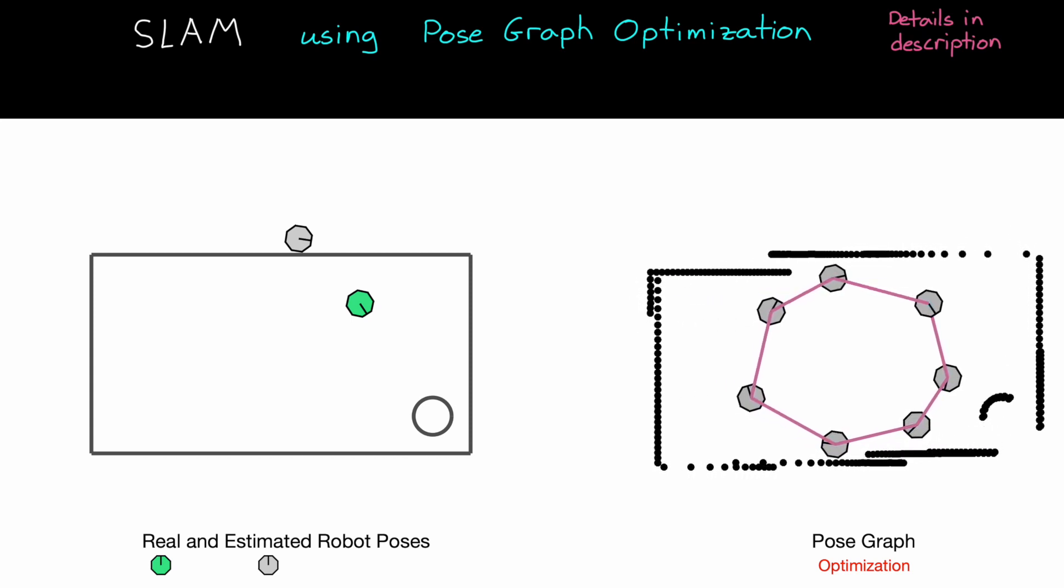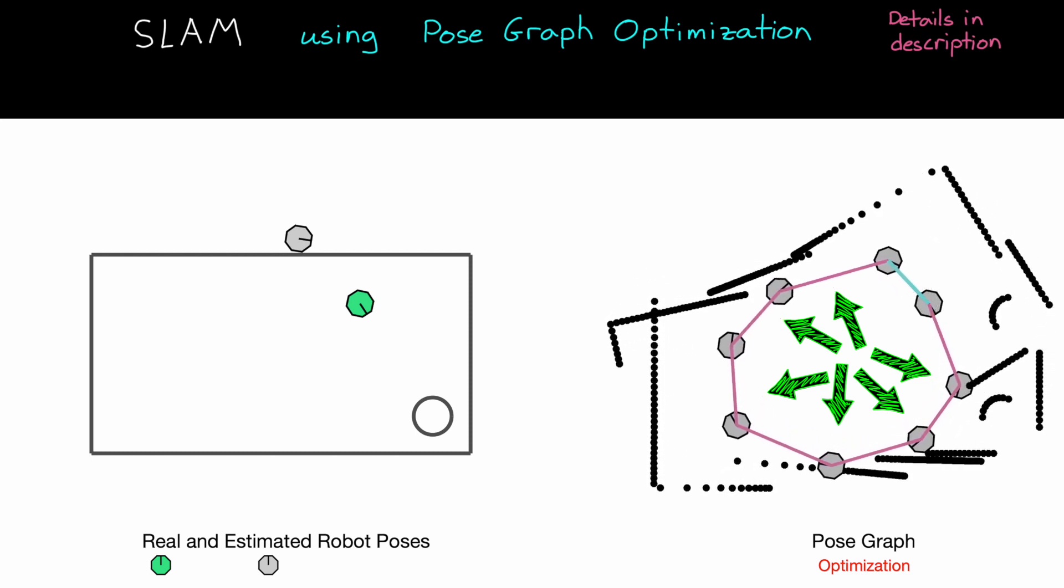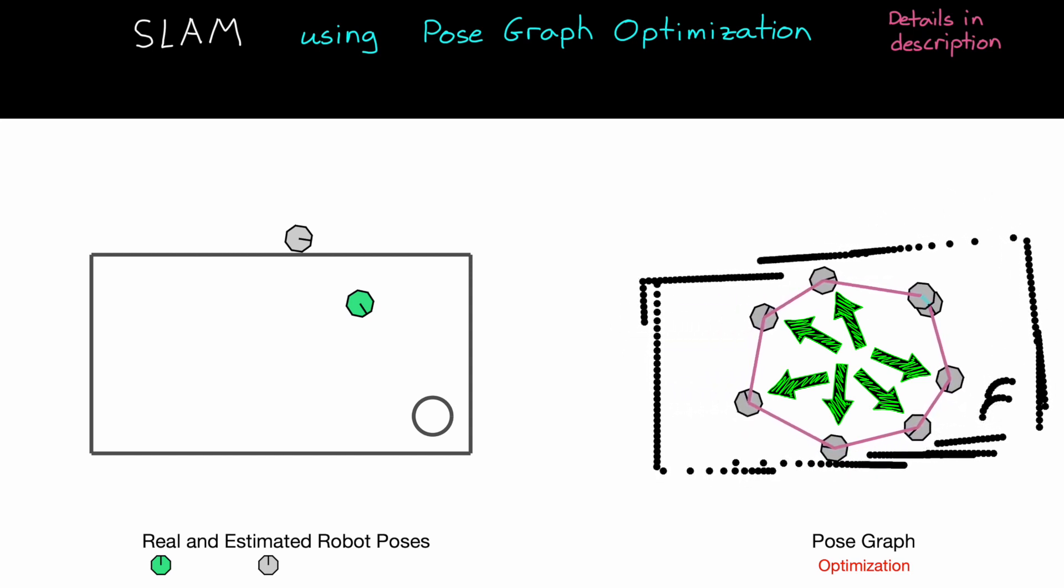And what's really cool about this is that by optimizing the pose graph, not only do we have a better estimate of the current pose and a better model of the environment, but we also have a better estimate of where the robot was in the past, since all of the past poses were updated as well. So we got a lot of value from this one loop closure.